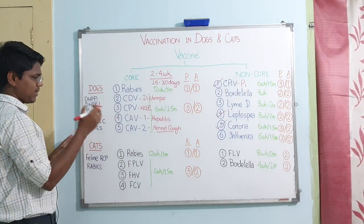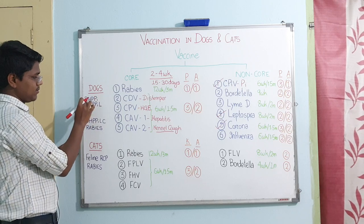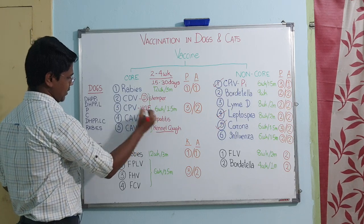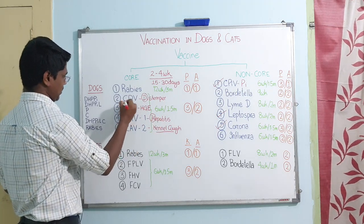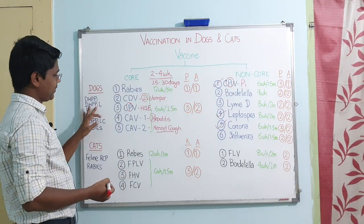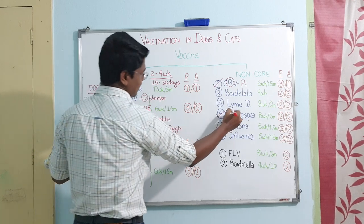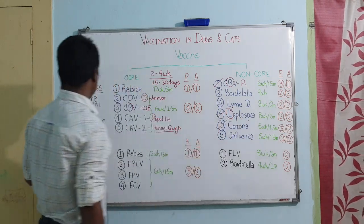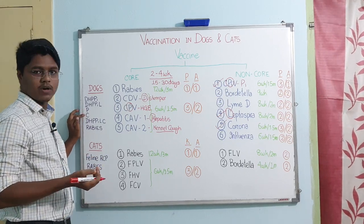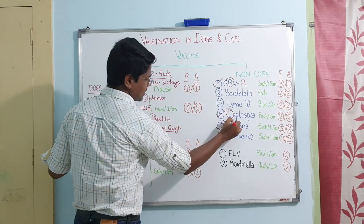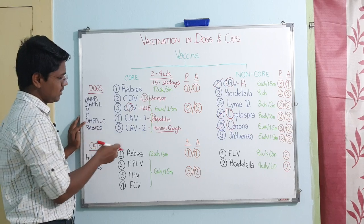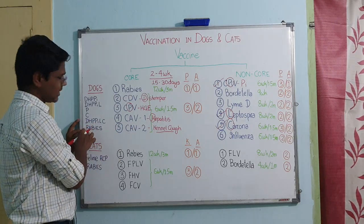Some vaccines available: some brands provide DHPPI — D for distemper, H for hepatitis, P for parvo, PI for parainfluenza. Some provide DHPPI-L, adding leptospira. Similarly, only parvo viral vaccines are available, only coronavirus vaccines are available, and some combine DHPPI-L with C for corona.